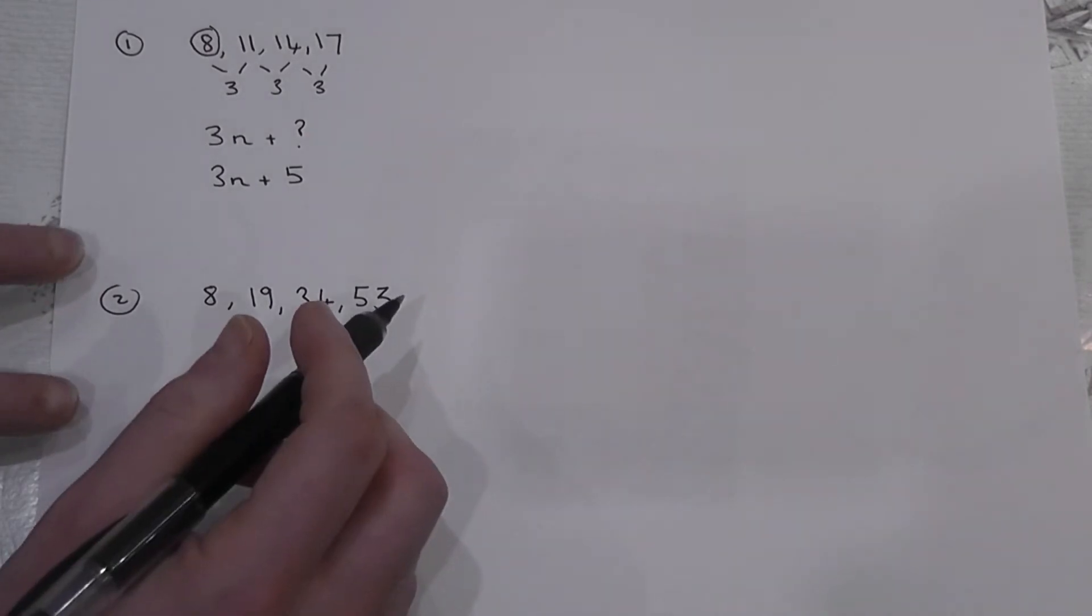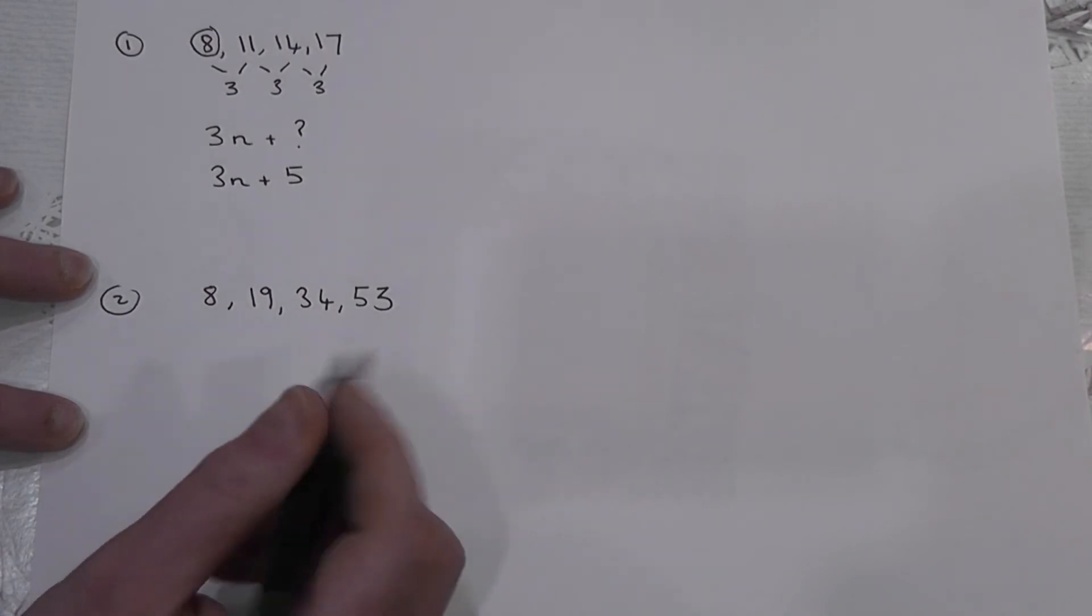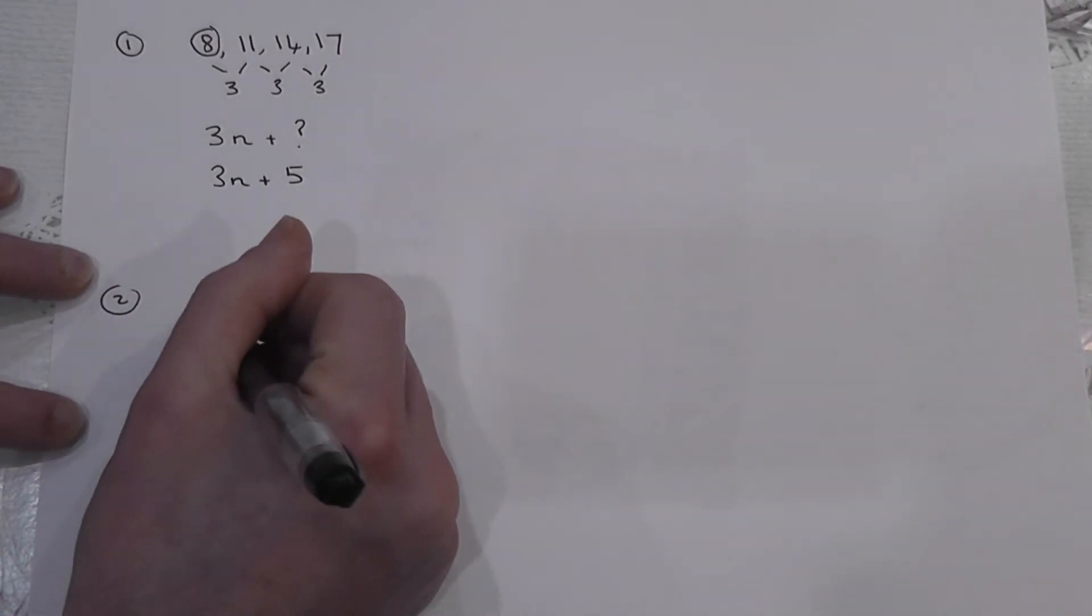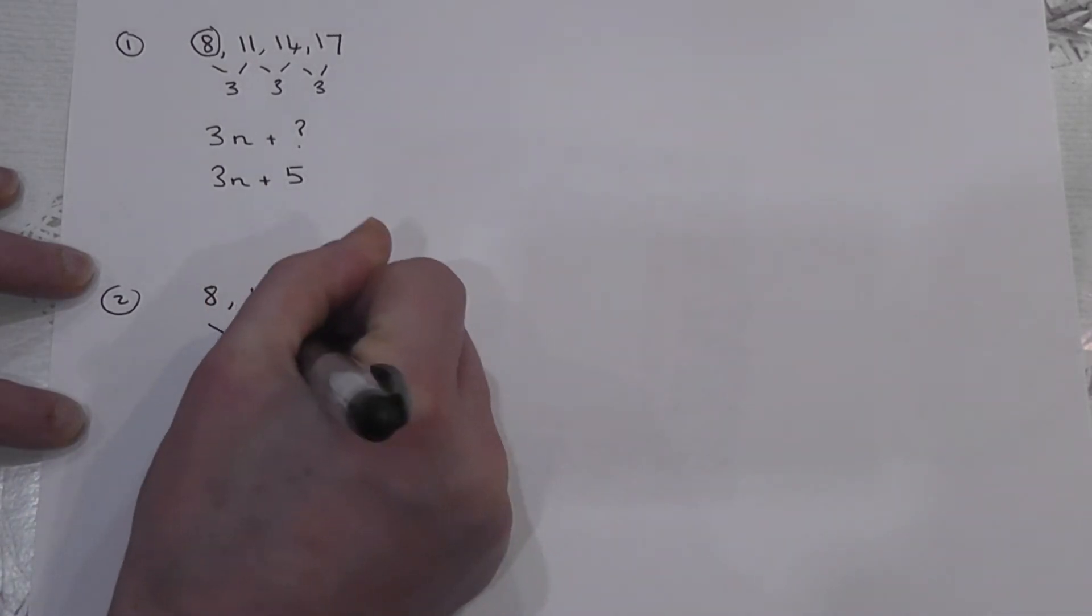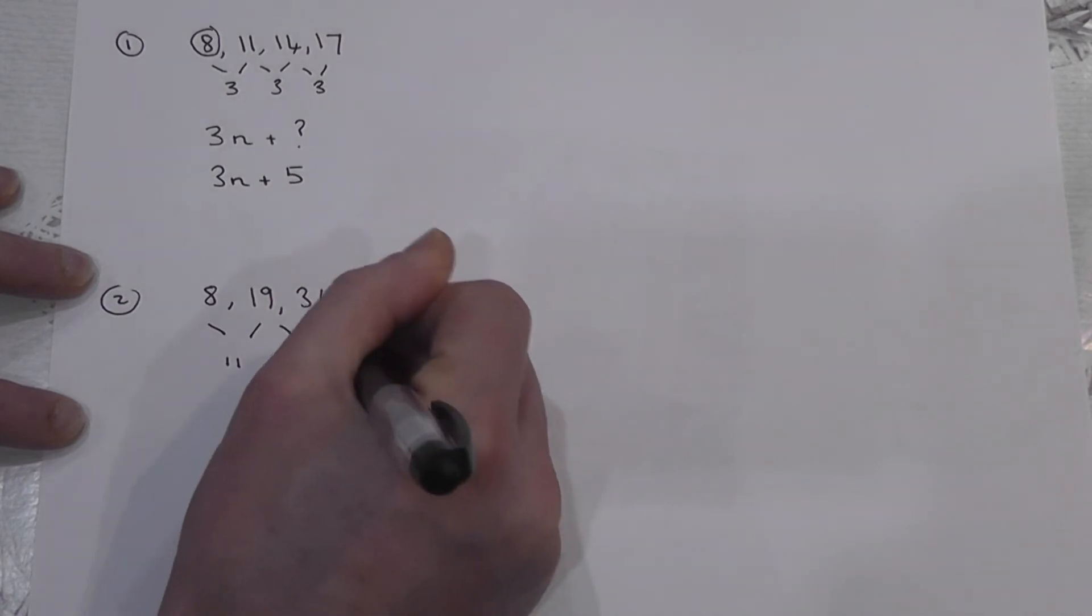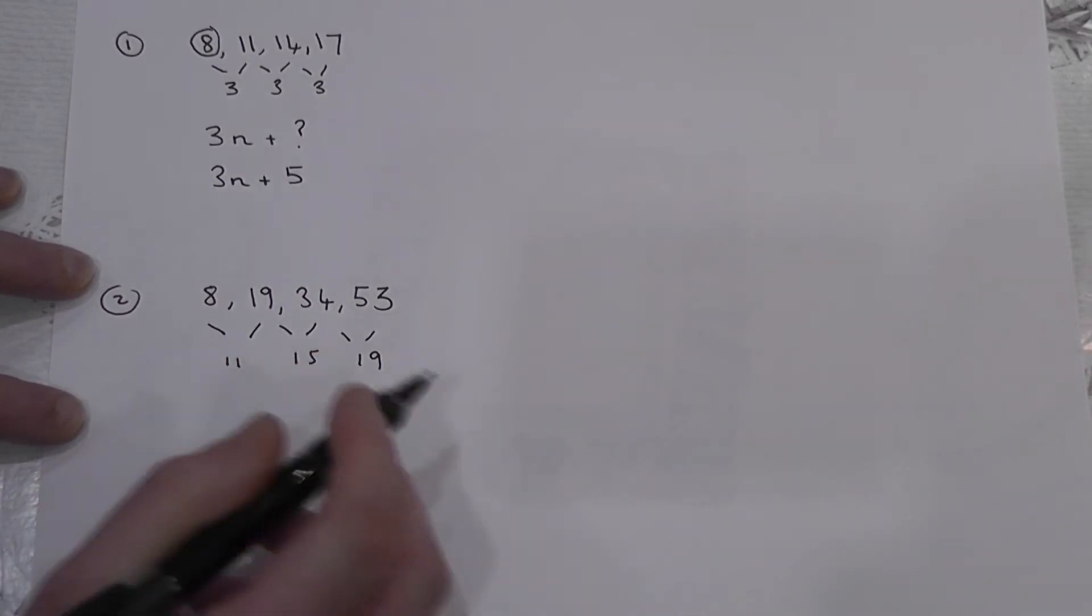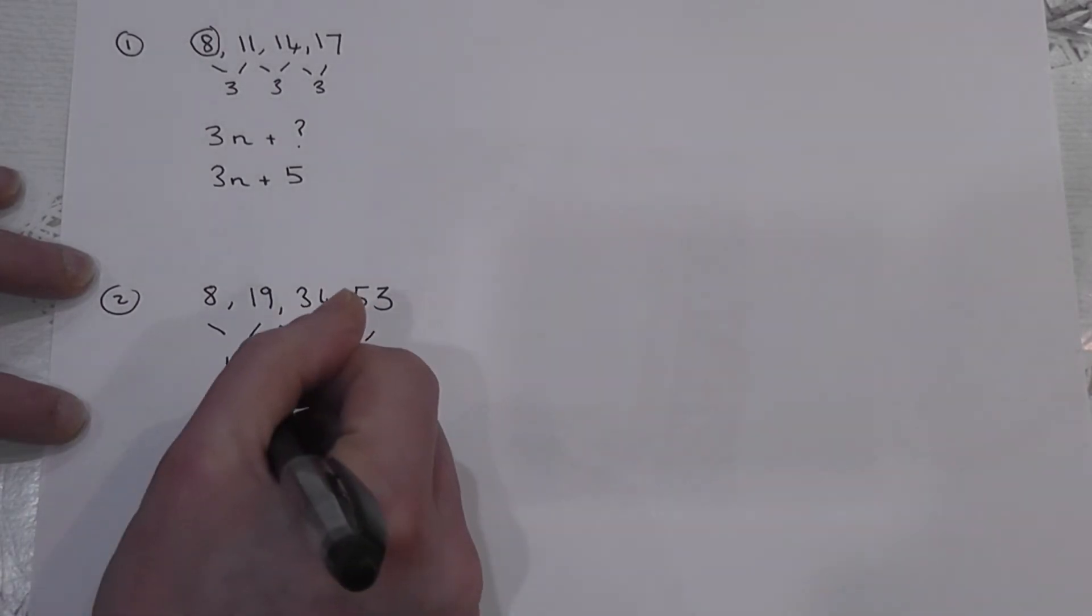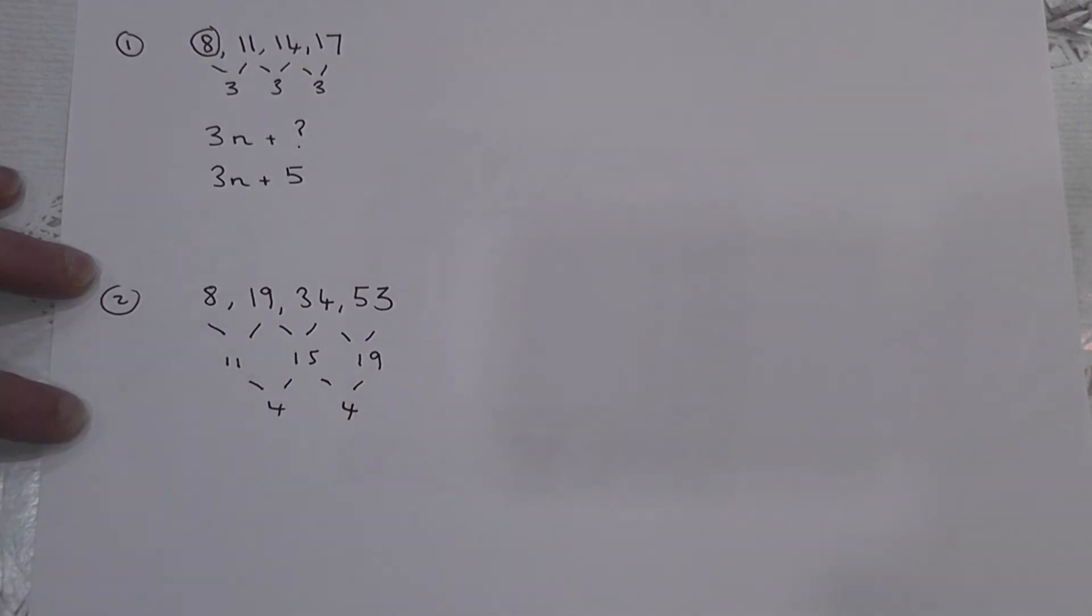The second one has got a slightly different pattern and it's called a quadratic sequence. If you find the first difference, 8 to 19 is 11, 19 to 34 is 15 and 34 to 53 is 19, the first difference this time is not constant. However, if you then find the differences of the differences, the second difference, 11 to 15 is 4, 15 to 19 is also 4. The second difference is constant.